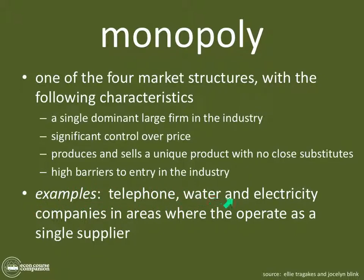Examples include telephone companies and water and electricity companies in areas where they operate as a single supplier. The best example from my lifetime was when I was a kid — there was only one electric company called Cleveland Edison, which had a complete and total monopoly over providing electricity to all of the west side of Cleveland, Ohio. Later on, they figured out ways of breaking up the monopolies and diversifying the sources of electricity, and now you can pick the electric company you get your electricity from.